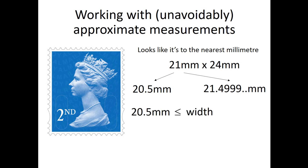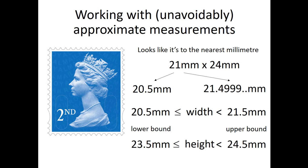At the bottom end, we've got 20.5 millimetres, which is less than or equal to the true width that we never really know. And at the top end, we've got a bound of 21.5 millimetres. Obviously, we have a strict inequality here. It has to be less than 21.5. If it was equal to 21.5, it would round up to the next one. We call the lower figure of 20.5 millimetres the lower bound, and the upper figure, guess what, the upper bound. And we can do exactly the same thing for the height of a postage stamp. It's 23.5 millimetres is less than or equal to the true height, which is itself strictly less than 24.5 millimetres. We have our lower and upper bounds.